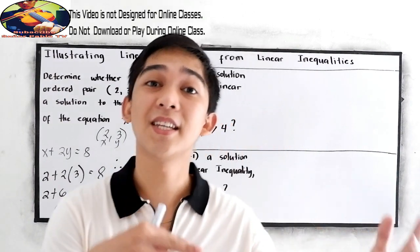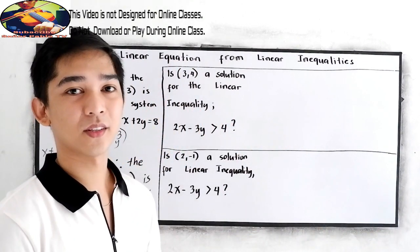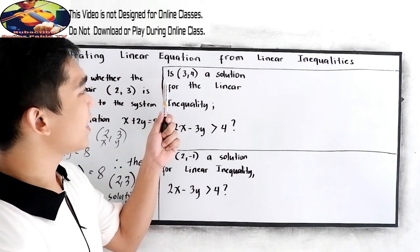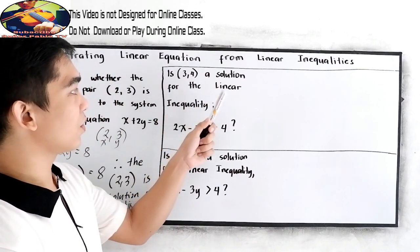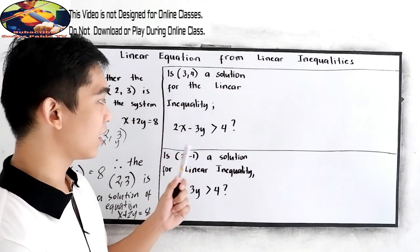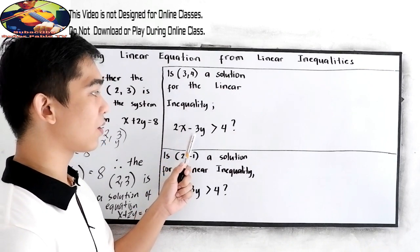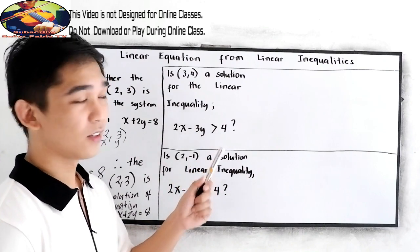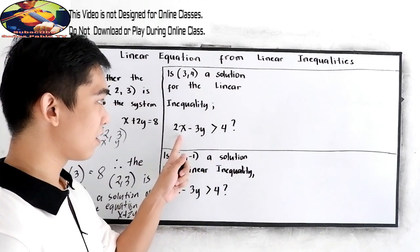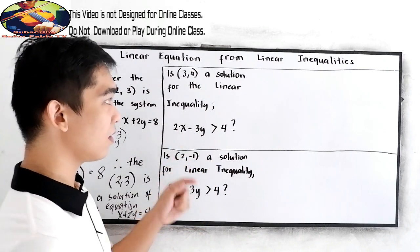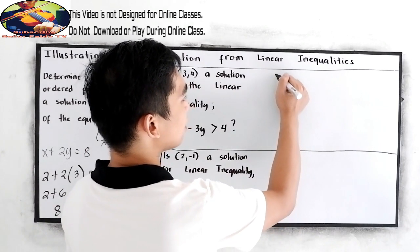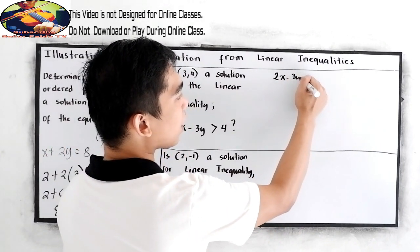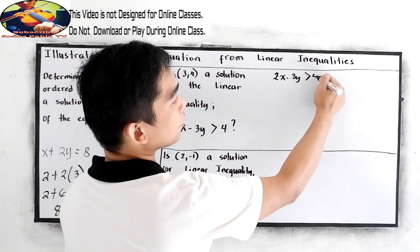The same approach applies to linear inequalities. Let's say we have this problem: is (3, 4) a solution for the linear inequality 2x minus 3y greater than 4? We copy the inequality: 2x minus 3y is greater than 4.